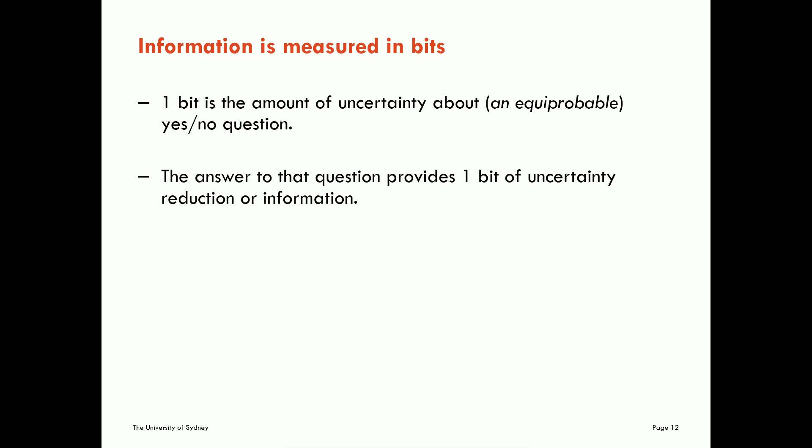Well, the answer to that question provides one bit of uncertainty reduction or information. As I say, uncertainty and uncertainty reduction or information are the two sides of the same coin. So here the examples could be what's the result of my next coin flip or what's the sex of the next person walking through the door? Once we know the result, that provides us one bit of uncertainty reduction to the one bit of uncertainty that we had about that question before we got the answer.